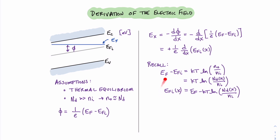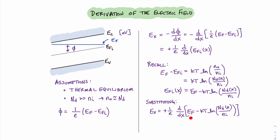Now, this is a simple matter of substitution and taking the derivative. Taking a look at this derivative, we can see that E_F is a constant value and therefore will not contribute. For the natural log term, natural logs are nice and simple when it comes to taking derivatives — all we have to do is take the value that is a function of x and it will come out as 1 over that value. Therefore, using the chain rule, we find the value to be minus kT over E times 1 over N_d(x) times the derivative of N_d(x). And this is our final equation for the electric field.